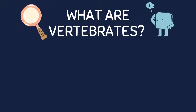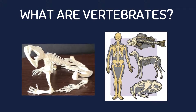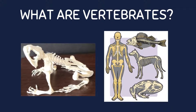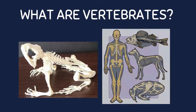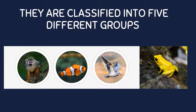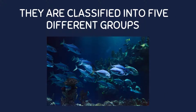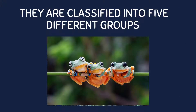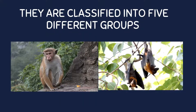What are vertebrates? Vertebrates are a group of animals that have a backbone or a spinal column. They are classified into five different groups: fish, amphibians, reptiles, birds, and mammals.